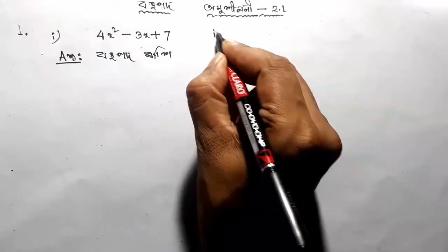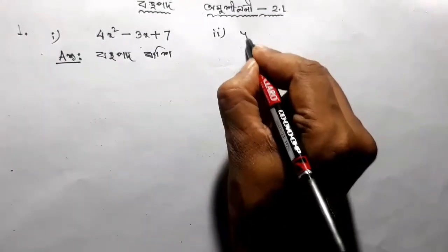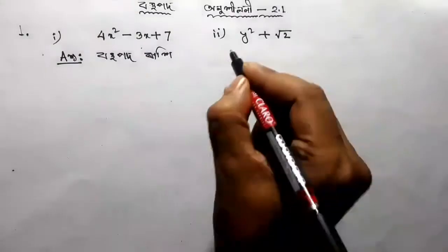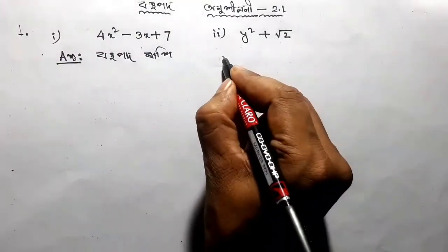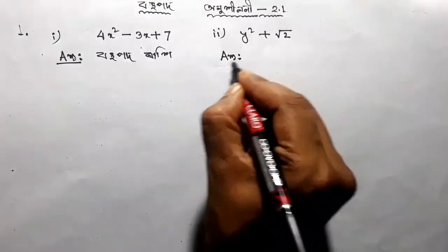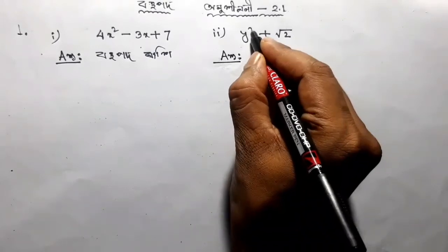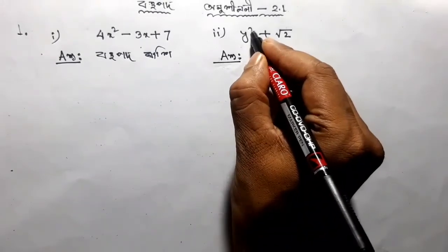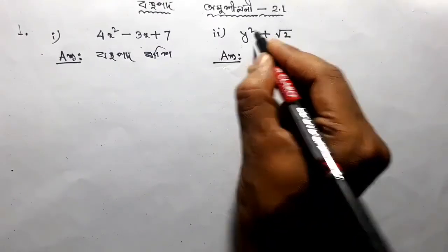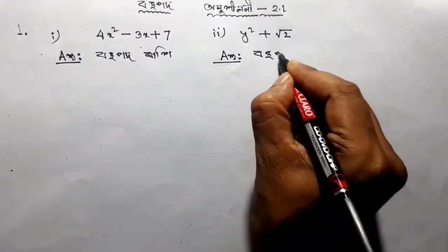Number 2: y squared plus root 2. So, what number 2 is — if you have root 2, you will be root 2. You will have root 2.